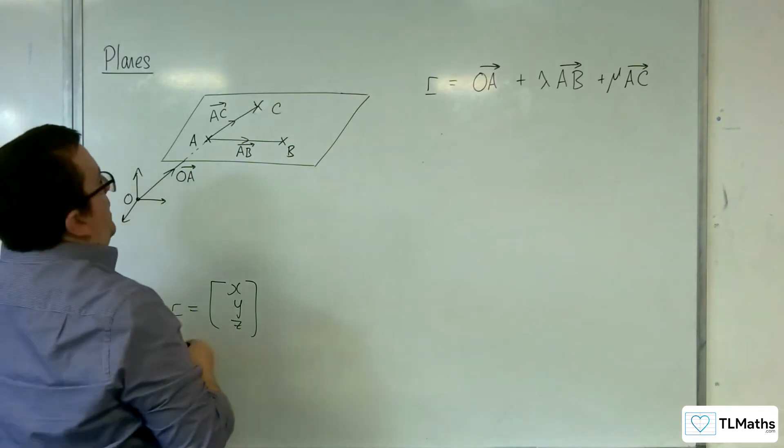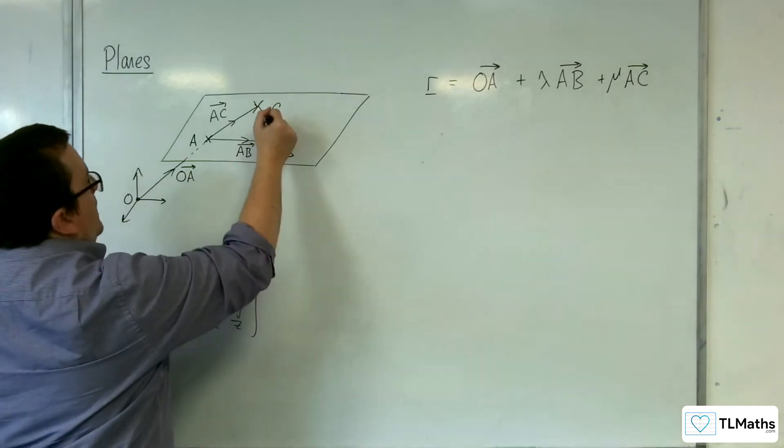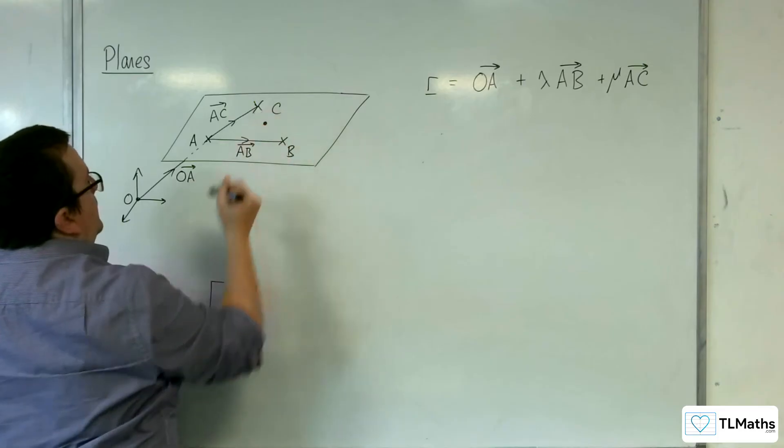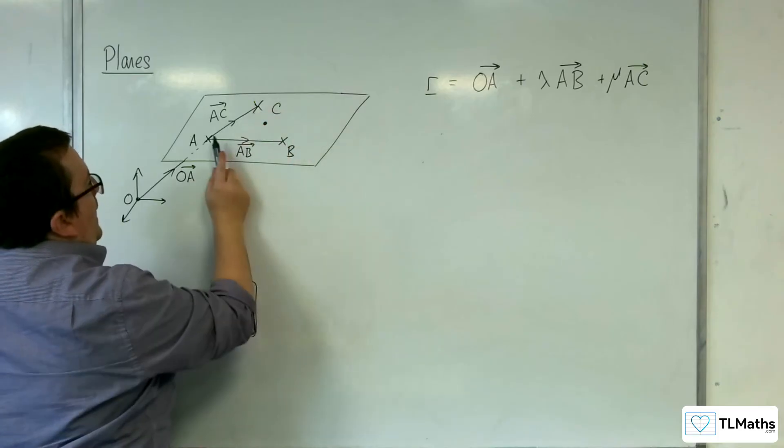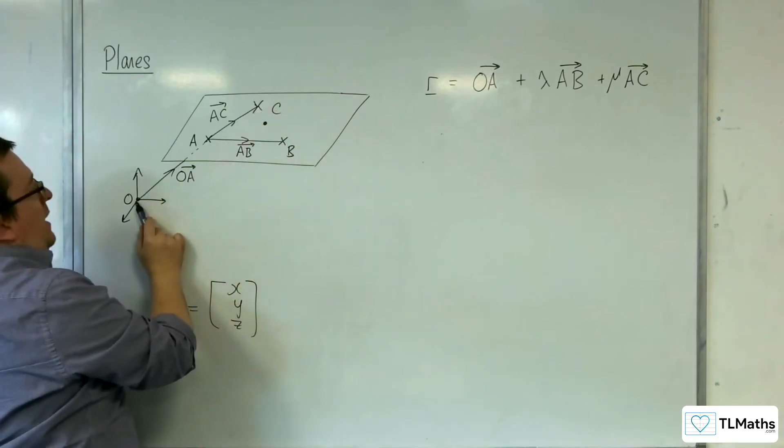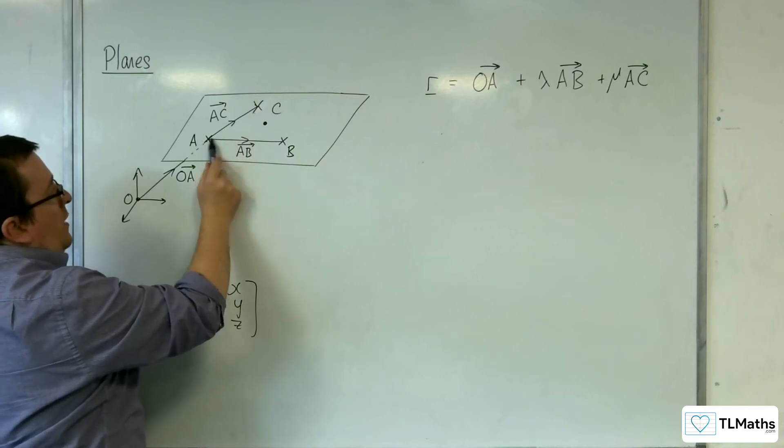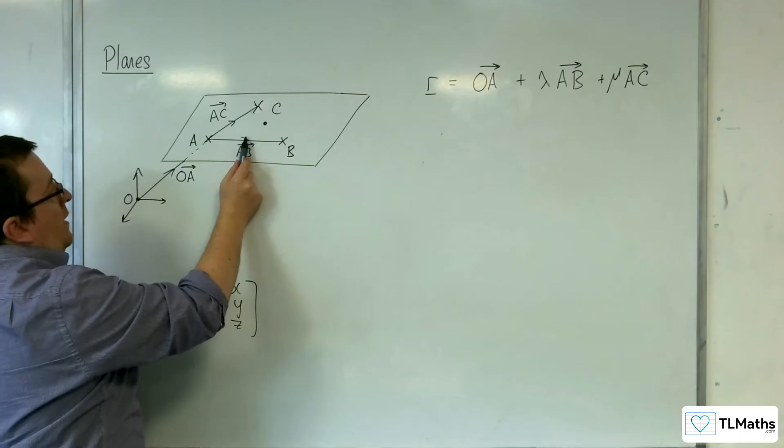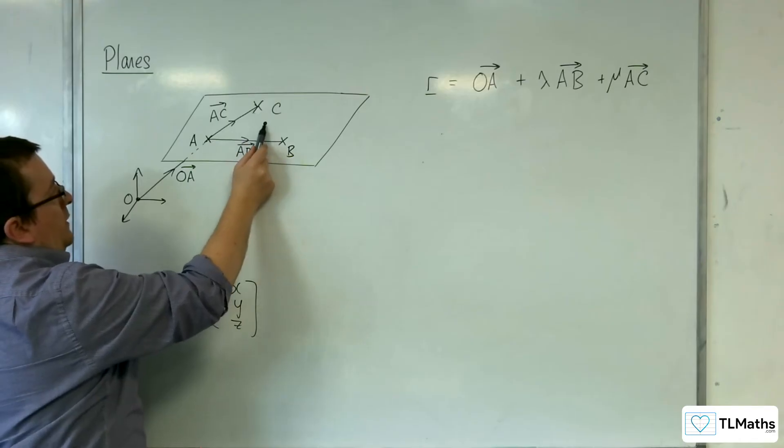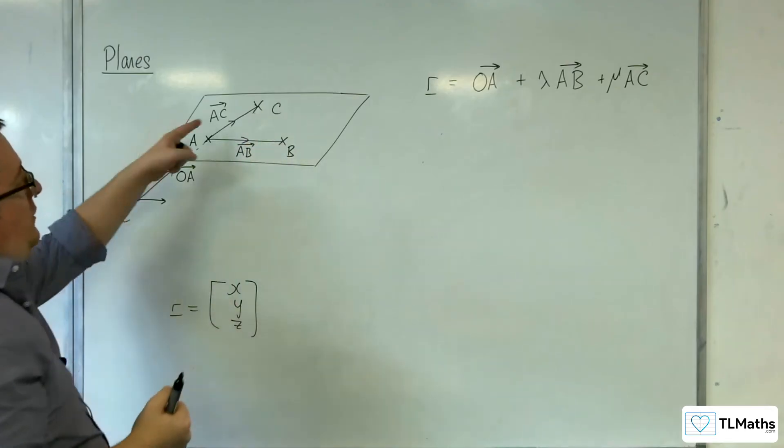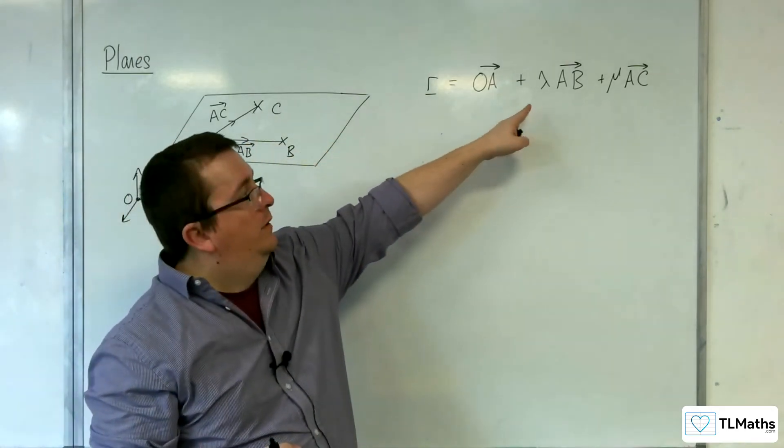So it might be, for example, I want to get here that's on the plane. And what I need to do is start at the origin and I go to A, and then I go halfway along AB, so one-half times AB, and then one-half times AC, and then I'm there.